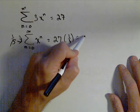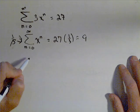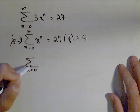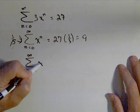So this just becomes 9. And now, over here, we have the summation of n equals zero to infinity of x^n.